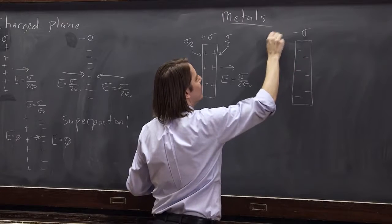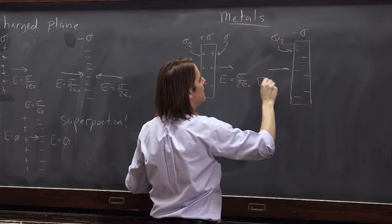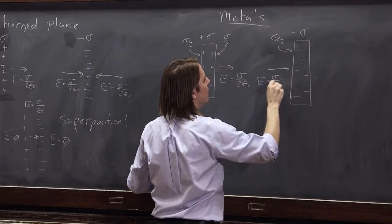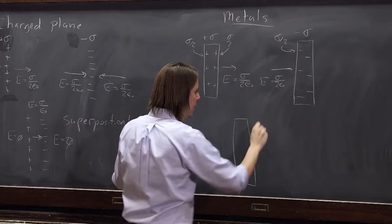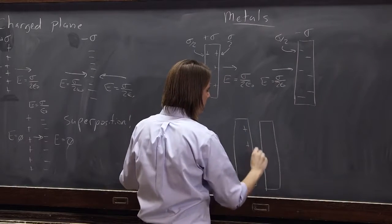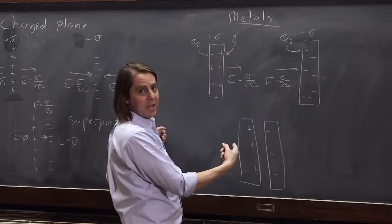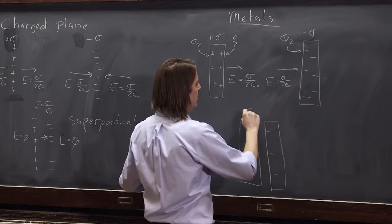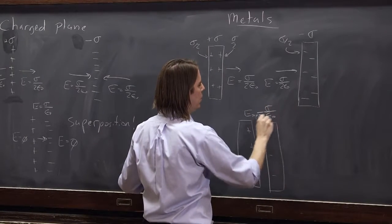Half the charge density goes on both sides, therefore the E field here, E equals sigma over two epsilon naught, therefore when you put them close together, where they really do act like infinite planes, like this, the E in the gap, when you put them together, would be sigma over epsilon naught.